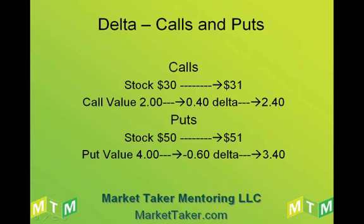Here's an example. Let's look at calls. The stock is at $30 and goes up to $31, so the stock has moved $1. The call's value was $2 and had a delta of 0.40 or 40. If the stock moved up $1, we expect the call value to move up 40 cents because the delta was 40.